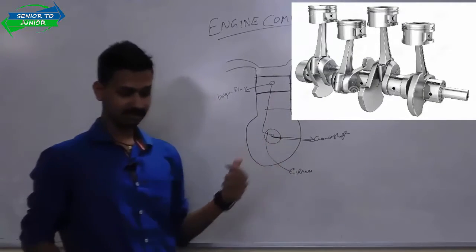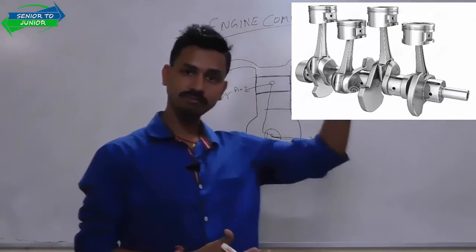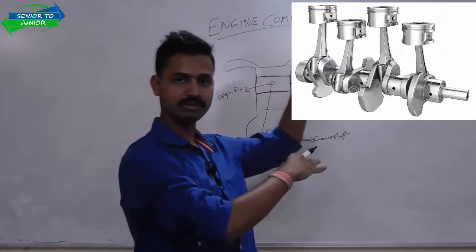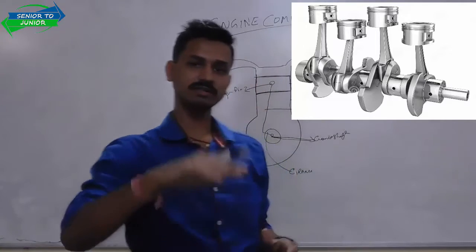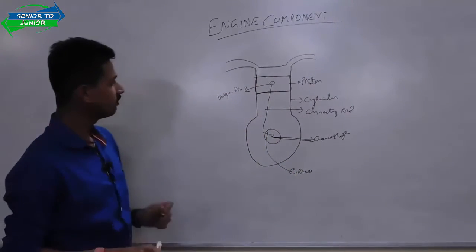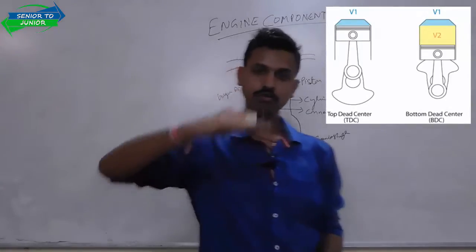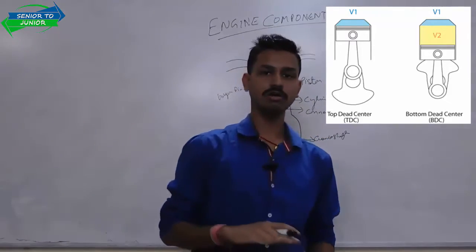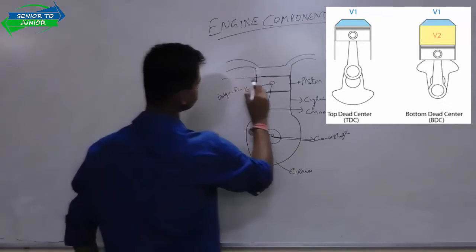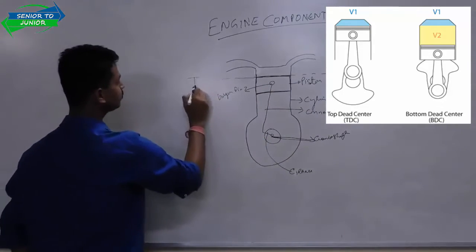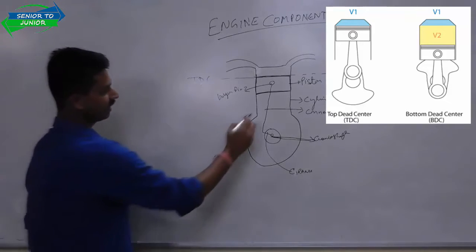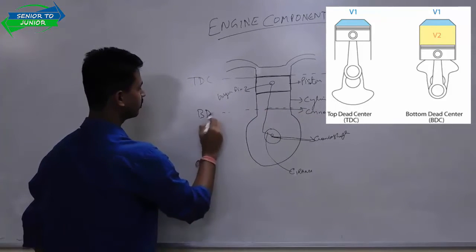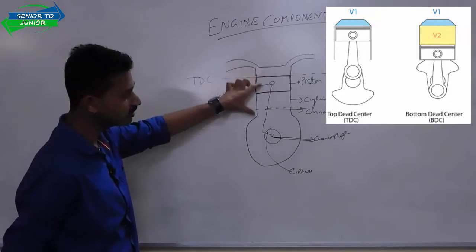First is your crankshaft. What the crankshaft does is it converts the reciprocating motion of the piston into a rotary motion. The power takes place here and the piston moves down, and it converts through the crankshaft into rotary motion. The top part till which the piston will go is called top dead centre, and the lowest point till which it can reciprocate is called bottom dead centre. The piston reciprocates between these two points only.